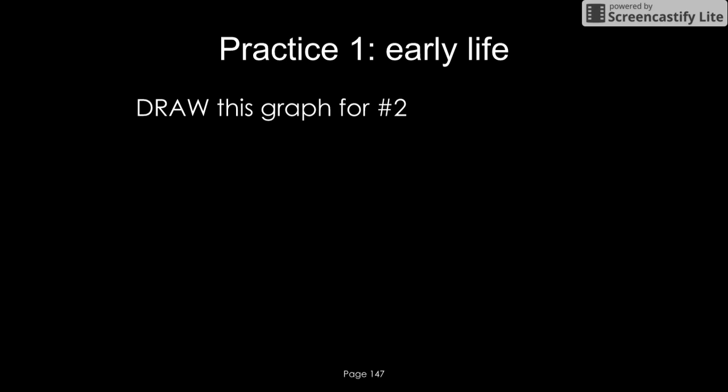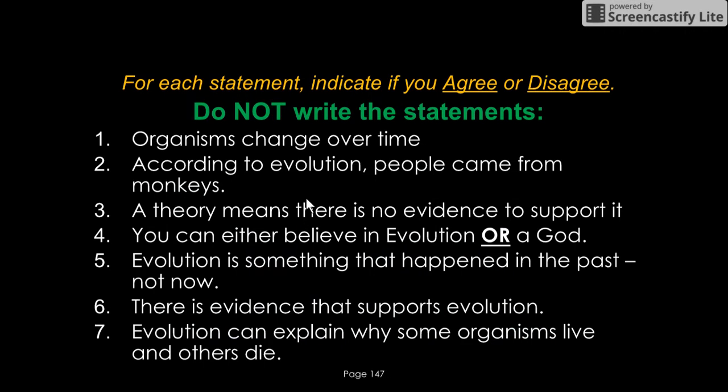We did that practice either in or outside of class - questions 1, 2, 3, and 4. To help with question 2, we had to draw a graph. If you don't have the graph, look to your neighbor and get that graph. On the bottom of page 147, you had seven questions to agree or disagree with. At that moment, it was an opinion question, so no right or wrong answer - just make sure you have all seven complete.